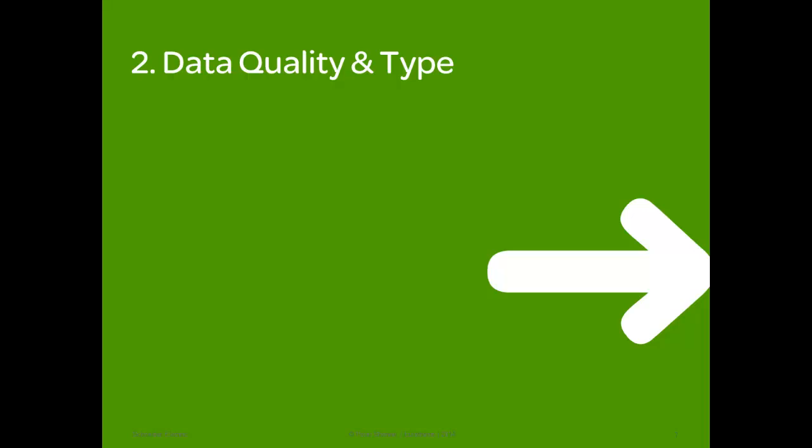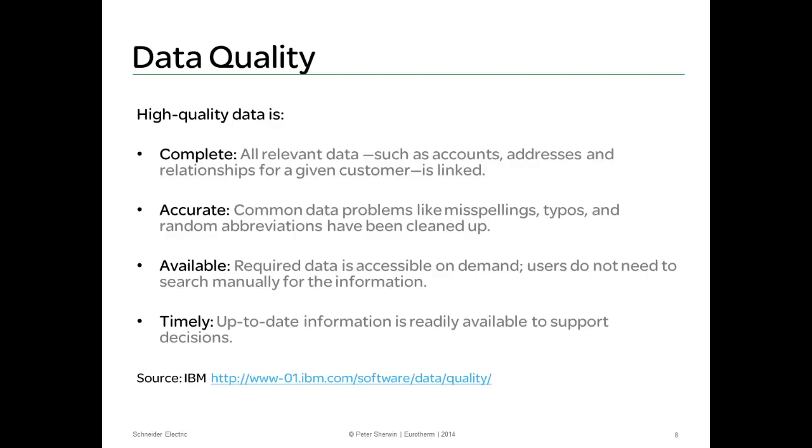So before we move on to some detail about AMS 2750E, let's have a quick look at data quality and data types. This is a typical definition for high quality data. Yes, it is linked to database records typically used for CRMs and similar products. However, we will use these common terms to discuss AMS 2750E and data quality. So for a heat treat example, complete might be no gaps in process data. Accurate - a true record of the temperature measured. Available - how to access both real time and historical process data. Timely - full information when you need it. For example, do you know a TUS has passed or failed as soon as it ended? This potentially could save time through a misstep of heating it back up for production when you need to potentially resurvey.